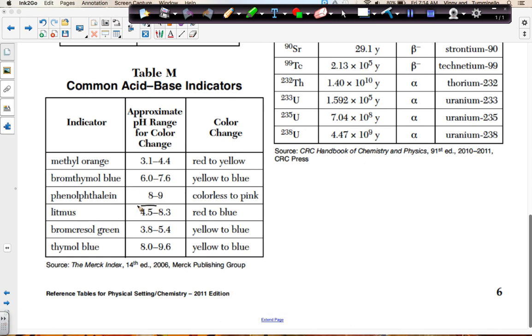The only exception to that is for litmus. In order for red litmus to change blue, you have to be higher than 8.3. In order for blue litmus to change to red, you need to be lower than 4.5 if we're talking about litmus paper.